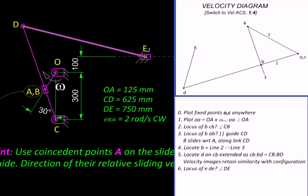And since E is constrained to slide along the horizontal guide shown here, relative to our fixed point O, its locus will be like this horizontal line. Wherever these two intersect, we locate the velocity image of E. And thus, we complete our velocity diagram.